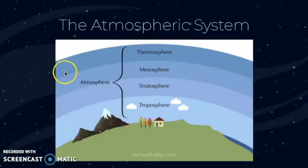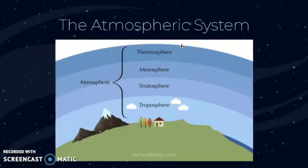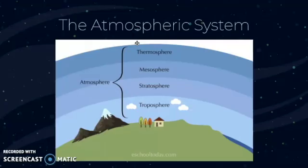When you move up to the final layer, the thermosphere, the temperature actually increases again with altitude. This is where the northern and southern lights occur, and it's very, very low pressure here.